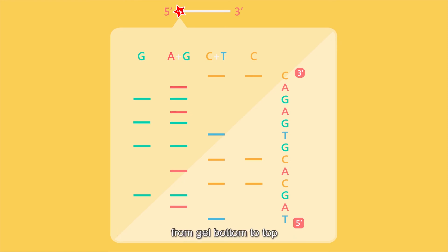The sequence is read from gel bottom to top to obtain the sequence of the entire DNA strand from the five prime end to the three prime end.